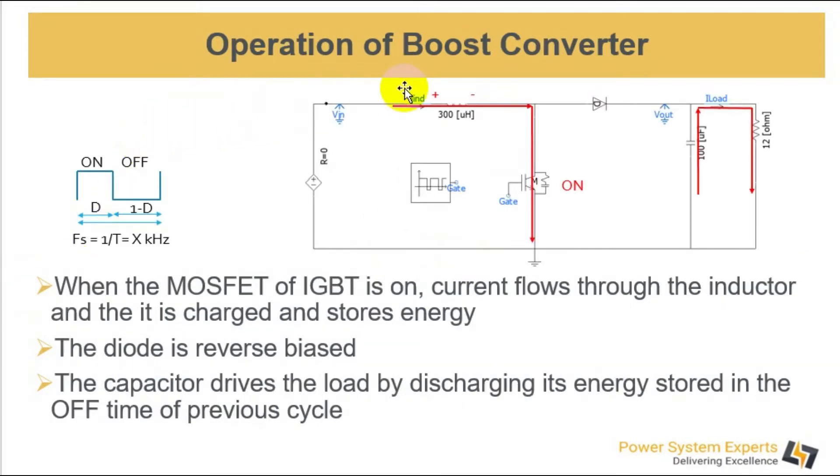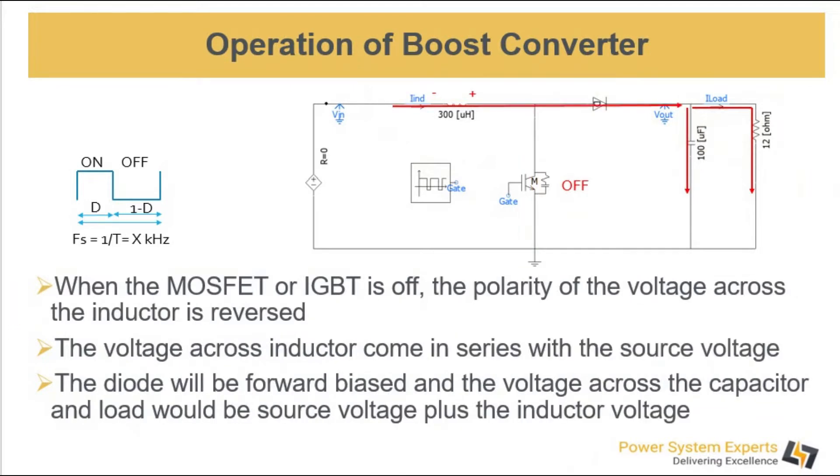The operation of Boost Converter is that when the MOSFET or the IGBT is on, the current flows through the inductor into the ground and the inductor is charged during this cycle. The load is driven by the capacitor which was charged in the previous cycle.